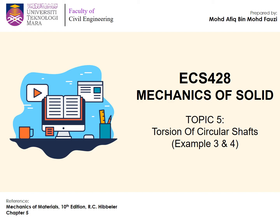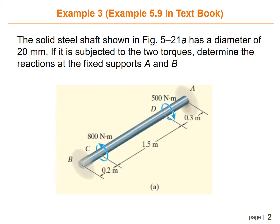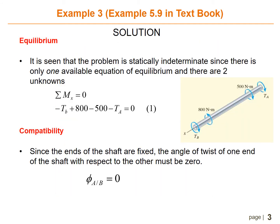For example number three, you can refer to the textbook example number 5.9. The solid steel shaft shown in the figure below has a diameter of 20 mm. It is subjected to two torques. Determine the reaction at the fixed supports A and B. Given that the diameter of the solid steel shaft is 20 mm.